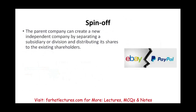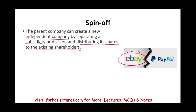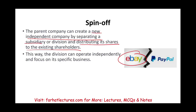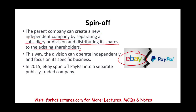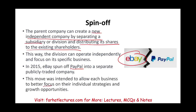A spin-off is another form of divestiture. The parent company creates a new independent company by separating a subsidiary or division and distributing its shares to the existing shareholders. In 2015, this is what eBay did when they separated PayPal into a separate publicly traded company. This move was intended to allow each business to better focus on its individual strategies and growth opportunities.